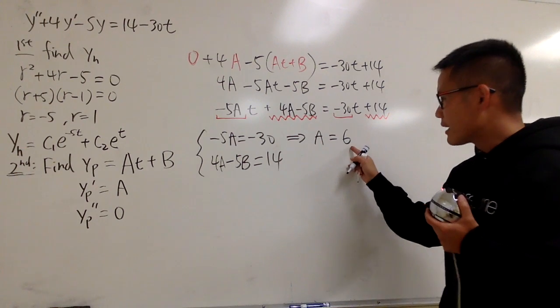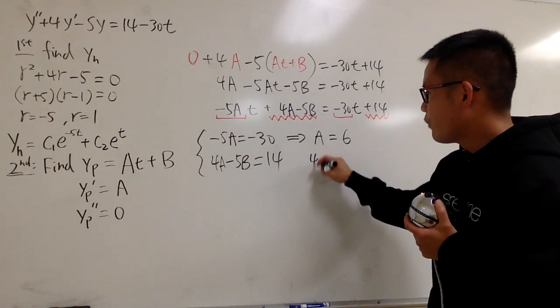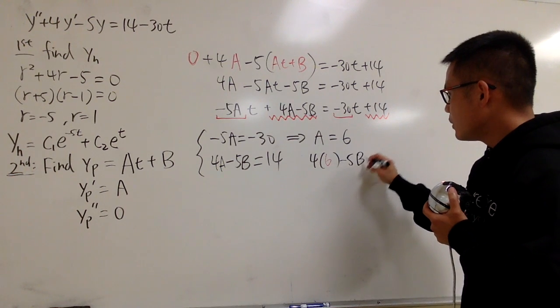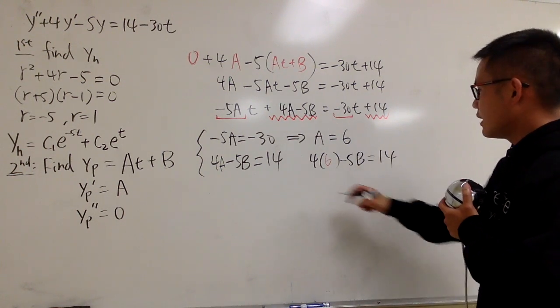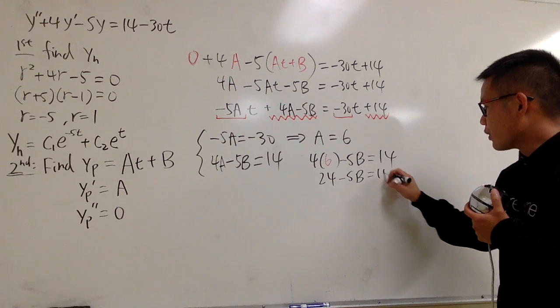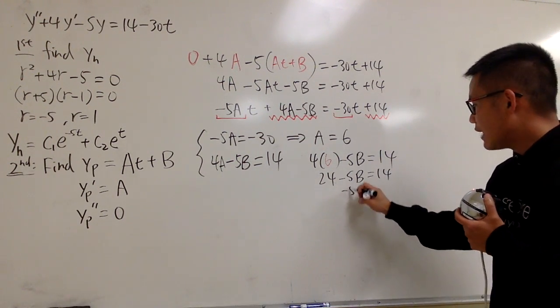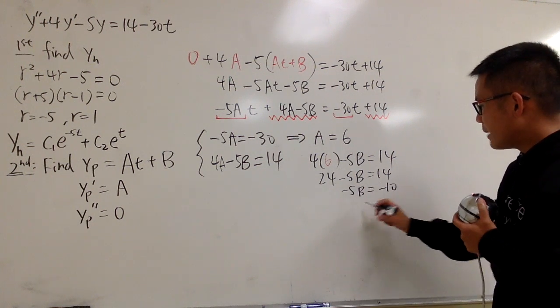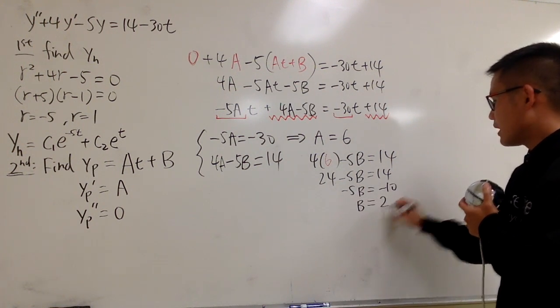And then I'm plugging 6 into here, so we have 4 times 6, and then minus 5B, which is equal to 14. And then just work this out, this is 24 minus 5B is equal to 14. Subtract 24 on both sides, we have negative 5B equal to negative 10. Divide by negative 5 on both sides, B is equal to positive 2.